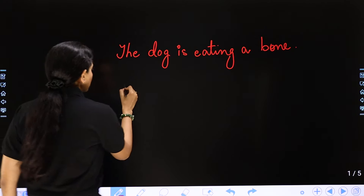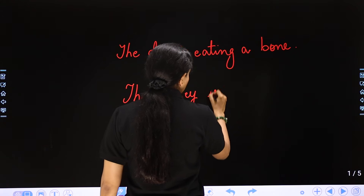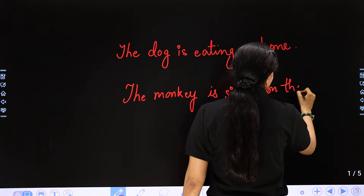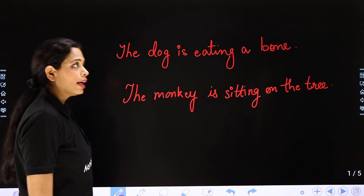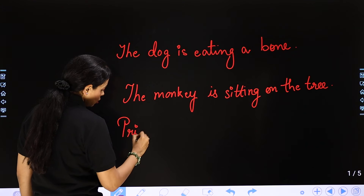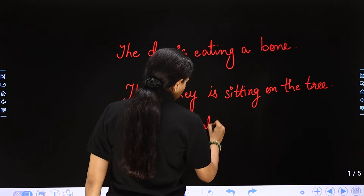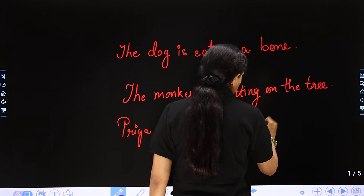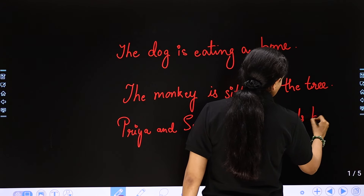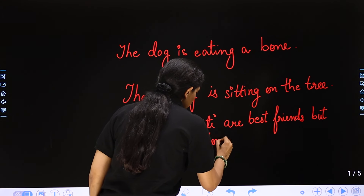Let me give you one more example: 'The monkey is sitting on the tree.' And one more example: 'Priya and Swati are best friends but they don't meet.'